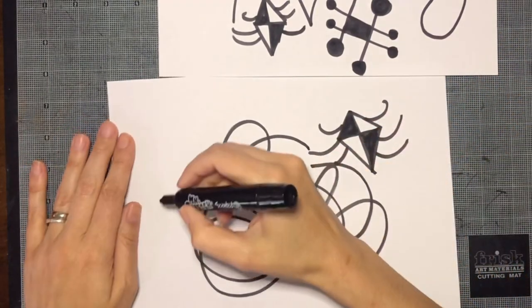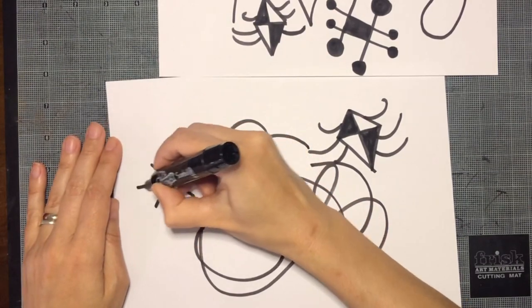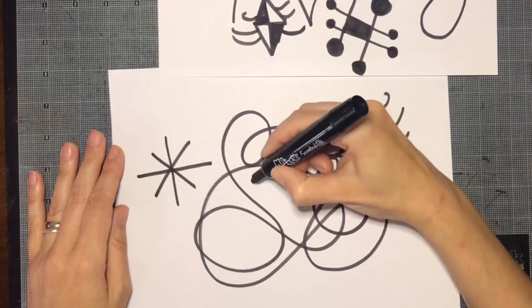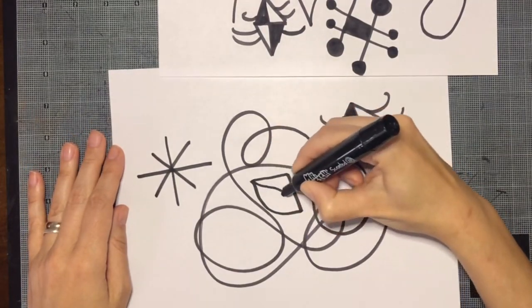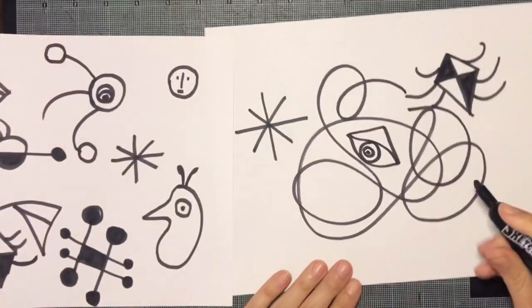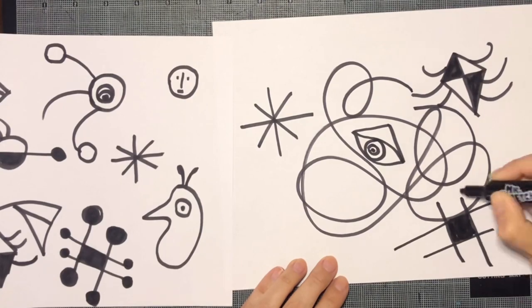I'm going to do the star because I saw that Juan Miró liked to use this star shape a lot. Look at your design and think where you want to place your shapes. I think I'm going to place this one inside of the line drawing. I will add a few more shapes and then I'll be done.